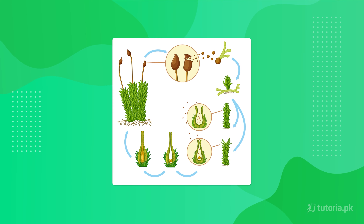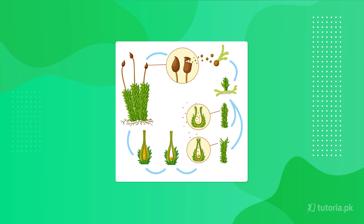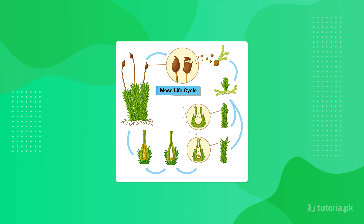First, we discuss mosses, because mosses belong to the class Bryopsida. Mosses have two generations: sporophyte and gametophyte, and they both alternate with each other. In this diagram, you can see that haploid spores are produced in the sporophyte by mosses. When these spores are released, they germinate to form the gametophyte.